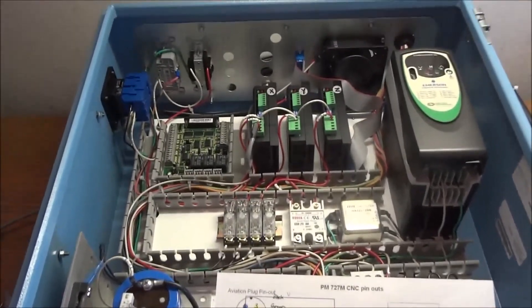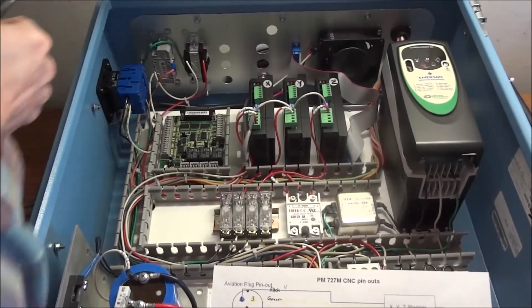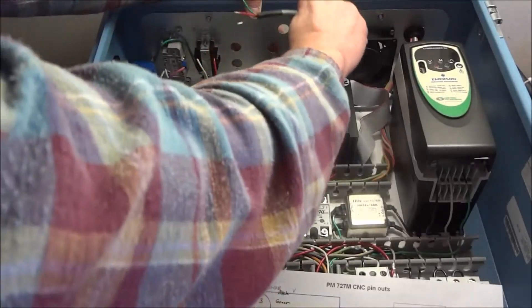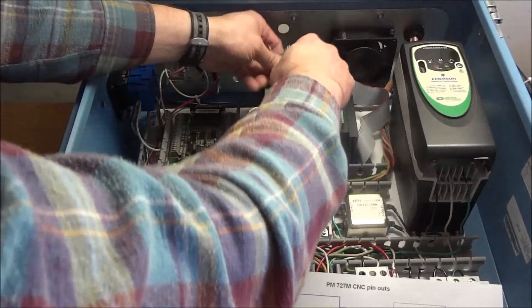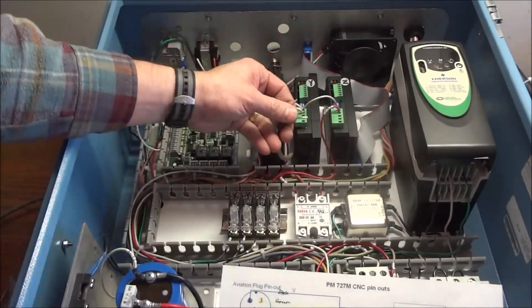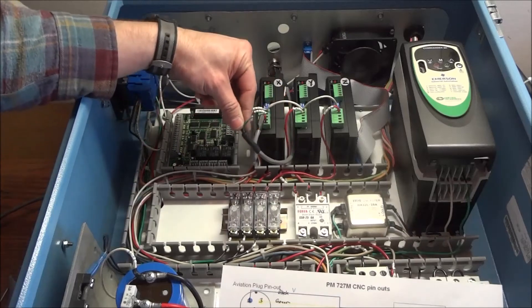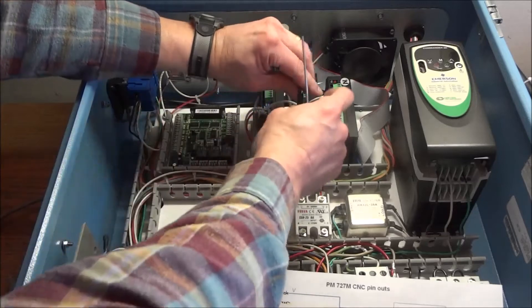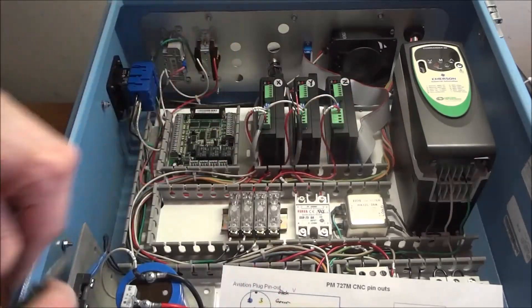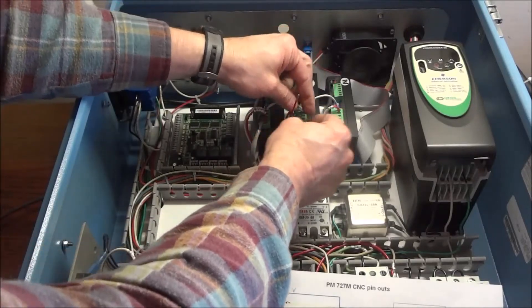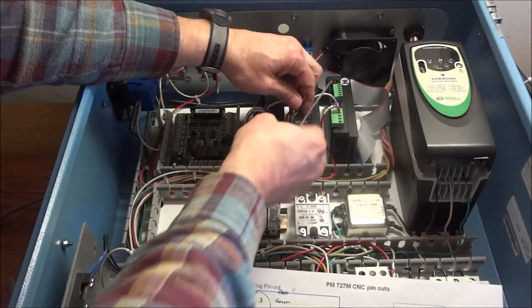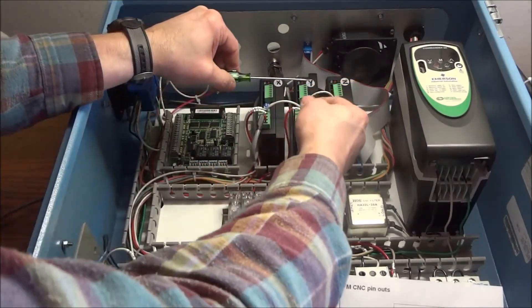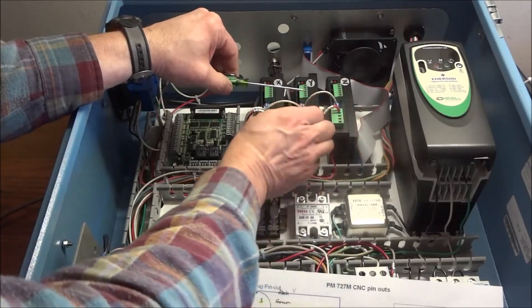Next we have our Y. All right, I'll just hand tighten that for now, let it move around a little bit. Bring this in and again, our first wire is green which is U, and then V which is our black wire, and then next is our red wire which is W.